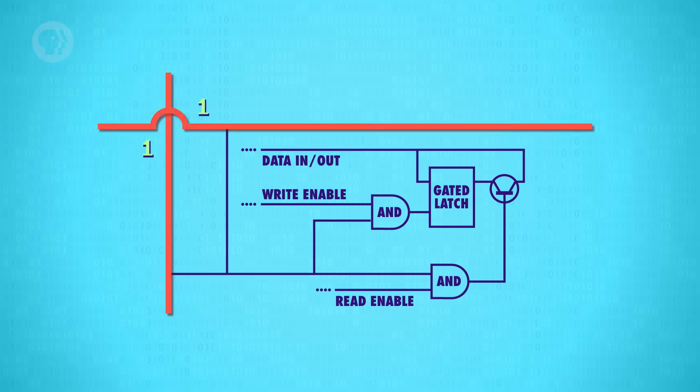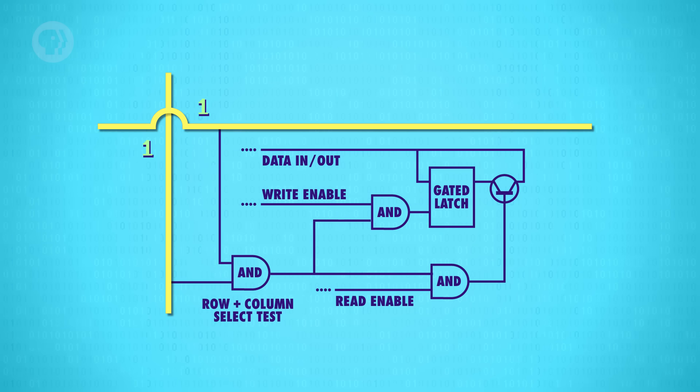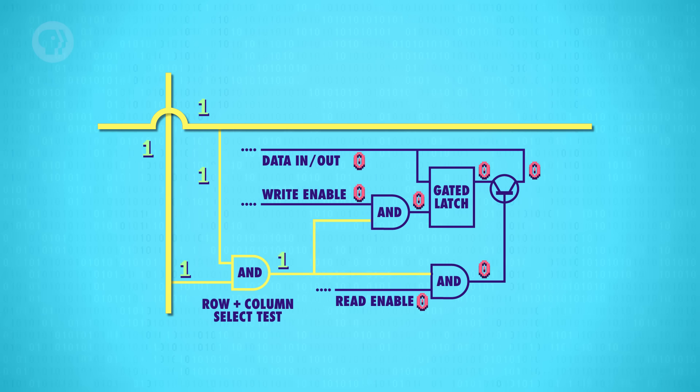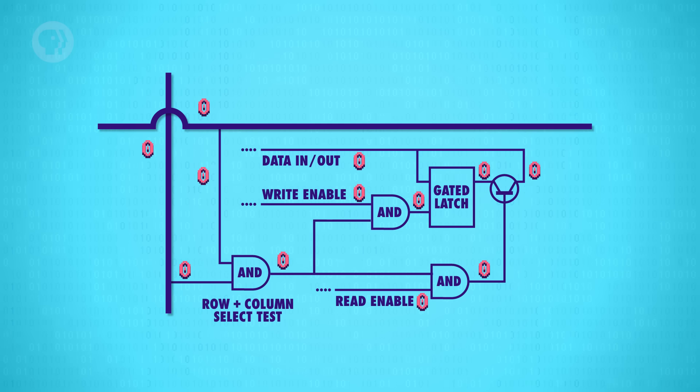We only want the latch at the intersection of the two active wires to be enabled, but all of the other latches should stay disabled. For this, we can use our trusty AND gate. The AND gate will output a 1 only if the row AND the column wires are both 1, so we can use this signal to uniquely select a single latch.